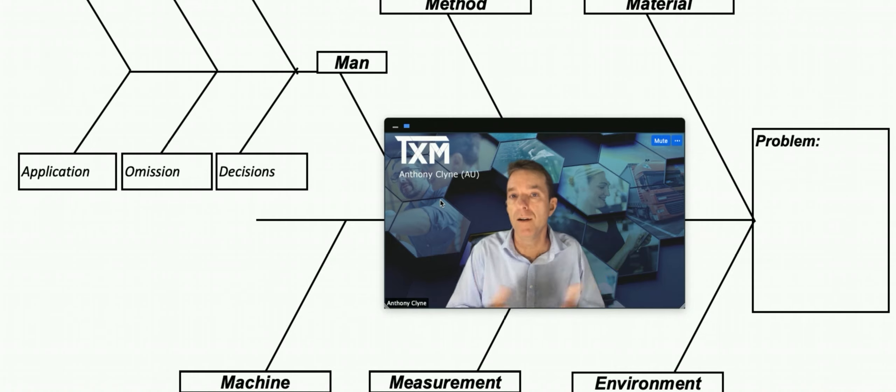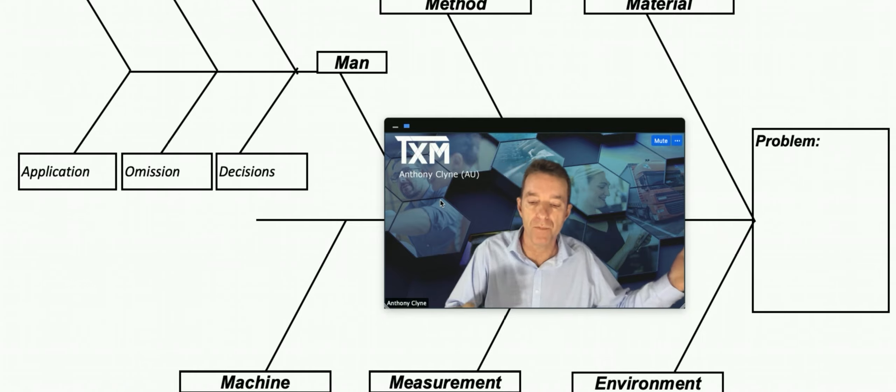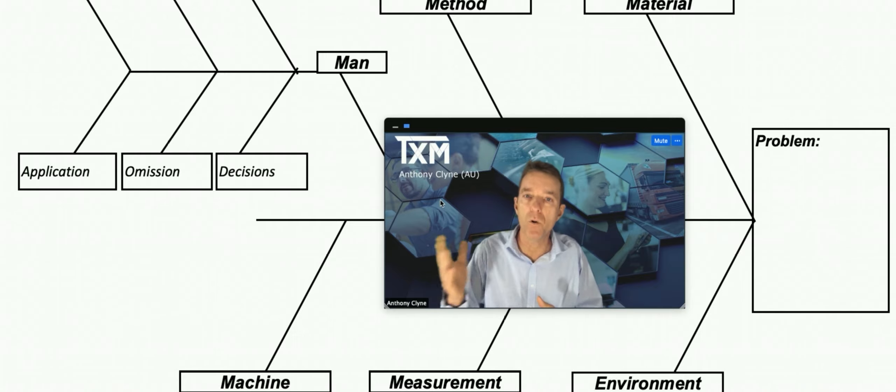Environment is simply the working environment has led to the defect, so there's a range of dimensions of environment. It could be the weather, temperature, moisture, it could be noise, it could be flashing lights, it could be distraction, or it could even be emotional environment and stress and that type of thing.